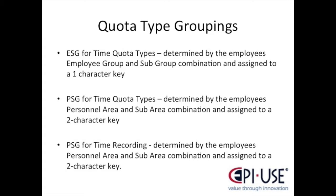The ESG for time quota types is determined by the employee's employee group and subgroup combination and is assigned to a one-character key. Next we have the PSG for time quota types, determined by the employee's personnel area and sub-area combination and assigned to a two-character key. Lastly, the PSG for time recording is also determined by the personnel area and sub-area combination, assigned to a two-character key, and is used not only here but also in time evaluation.